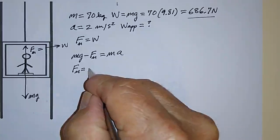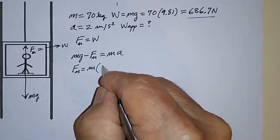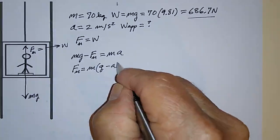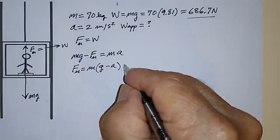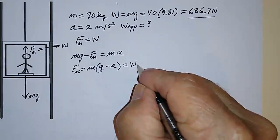So what we want to find out is Fn because that's the new weight, the apparent weight. Fn is equal to m times g minus a. It's as simple as that and that's equal to the apparent weight.